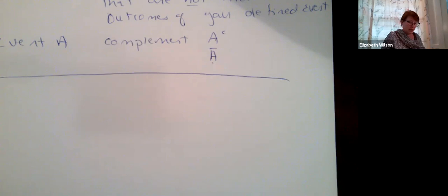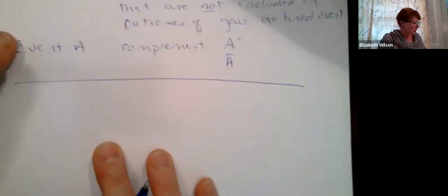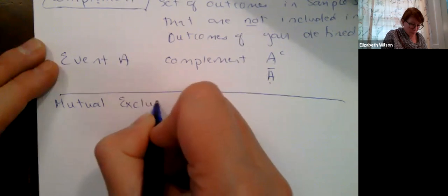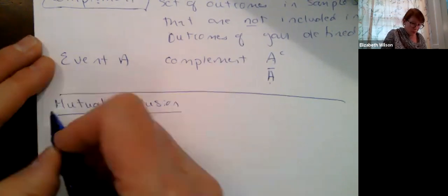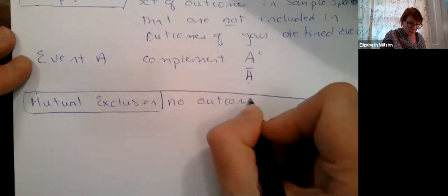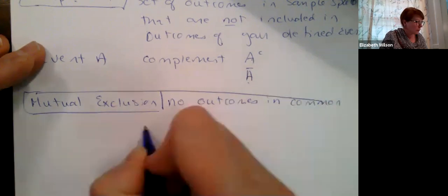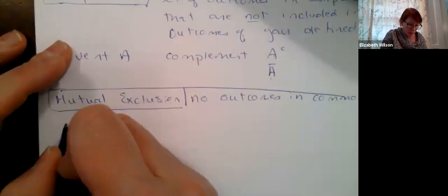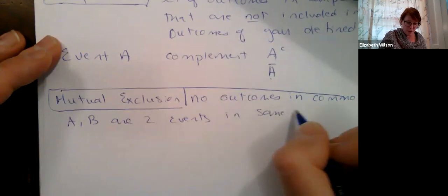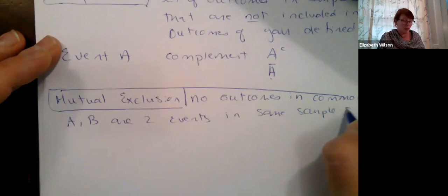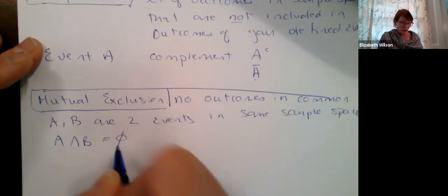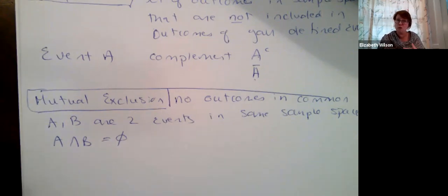One last important definition: mutual exclusion. Mutual exclusion means two events A and B, in the same sample space, have no outcomes in common. When we take their intersection, the result is the null set. If the intersection of A and B is the null set, we say A and B are mutually exclusive events.